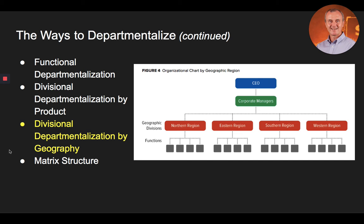The third design method for departmentalizing the organization is by geographic area, shown in Figure 4 from your text. A geographic divisional structure is one in which divisions are organized according to the different areas where the organization operates, grouping the firm's customers by region of the country or the world. This structure allows the organization to focus on specific customer needs in a particular geographic area. Because the geographic structure is very similar to the divisional product structure, their strengths and weaknesses mirror each other — the only difference lies in the specific business unit, that is, the geographical division versus the product division.